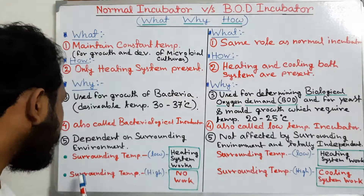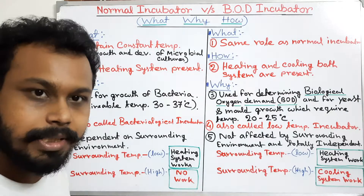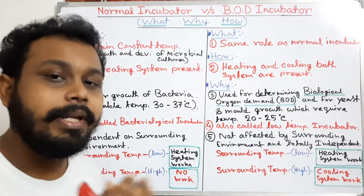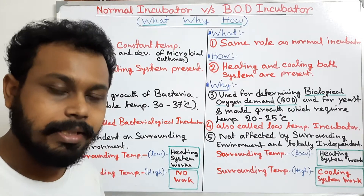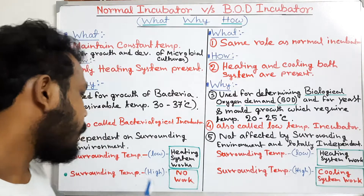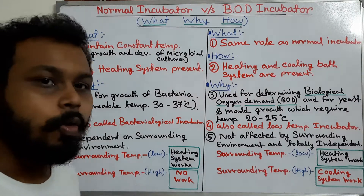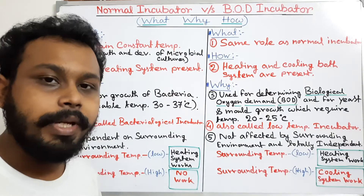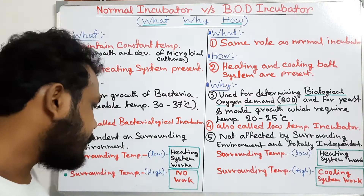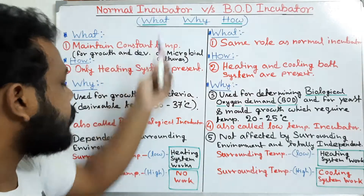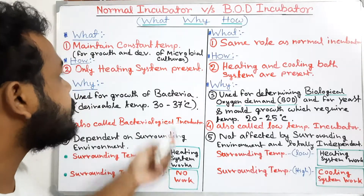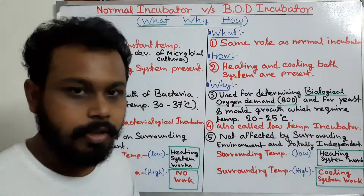However, if the surrounding or room temperature is higher than our setting temperature — for example, if we need 25°C but the room temperature is 30°C — the normal incubator cannot work because it has no cooling system. This is a disadvantage of the normal incubator.